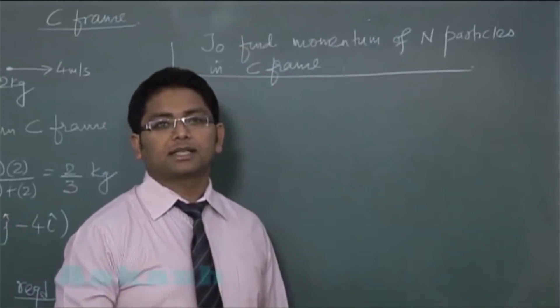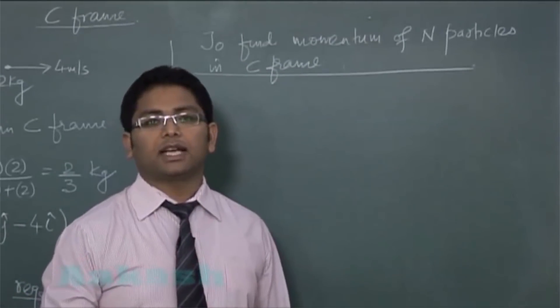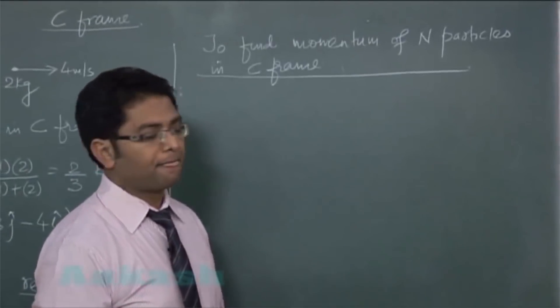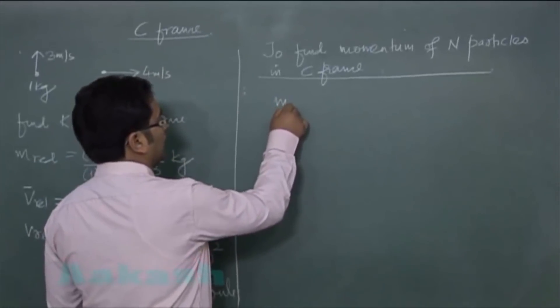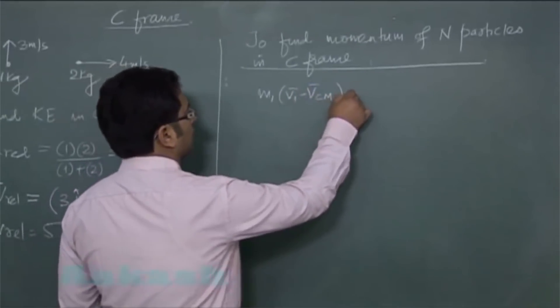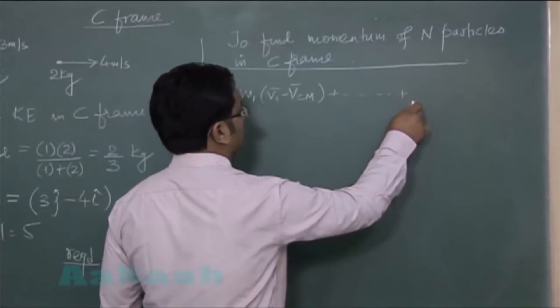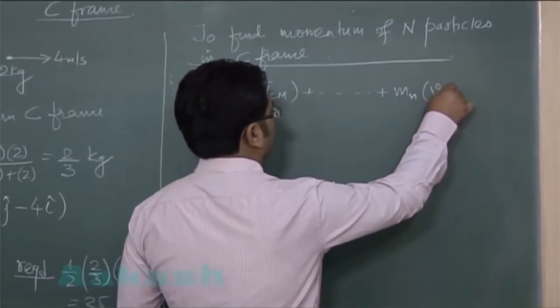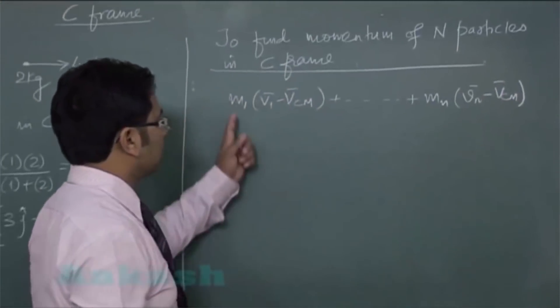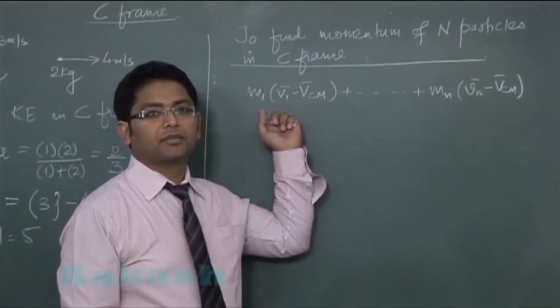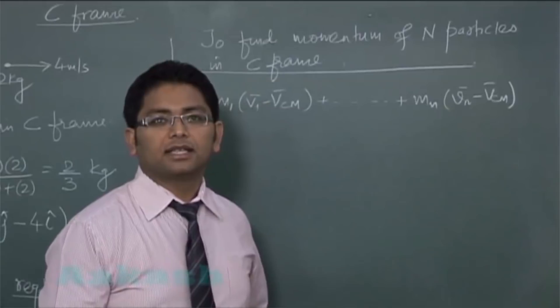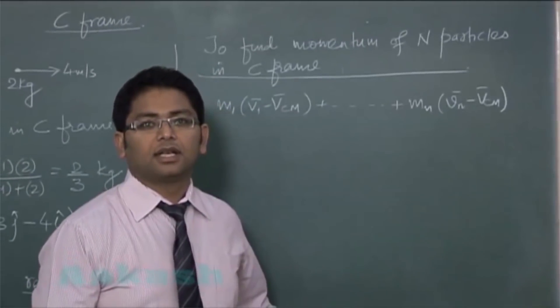In this N particle system we would like to find the momentum of particles. Let's see, by definition: momentum equals M1 V1 minus VCM plus... so on, Mn Vn minus VCM. It's the momentum of first in C frame, momentum of second in C frame, so on, momentum of nth particle in C frame.